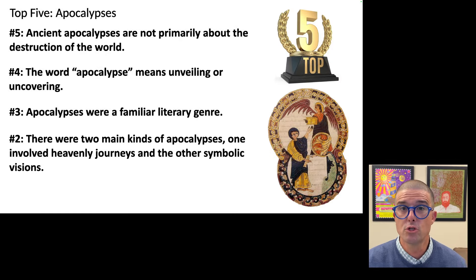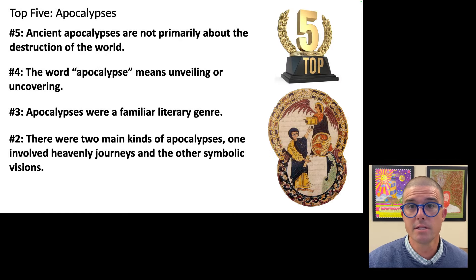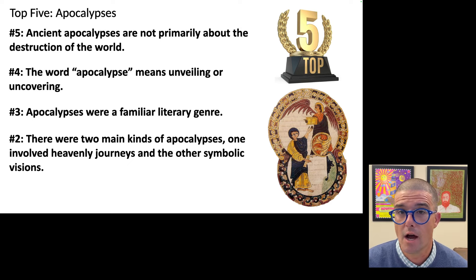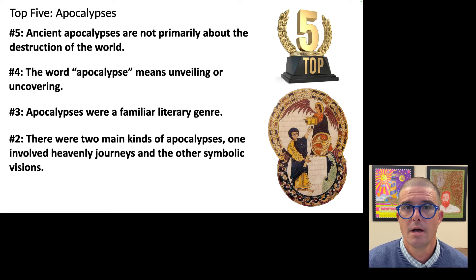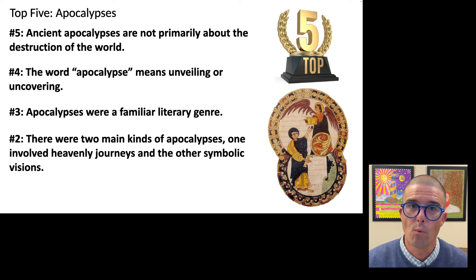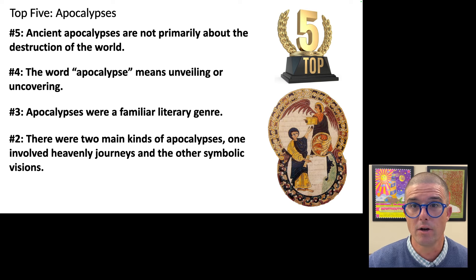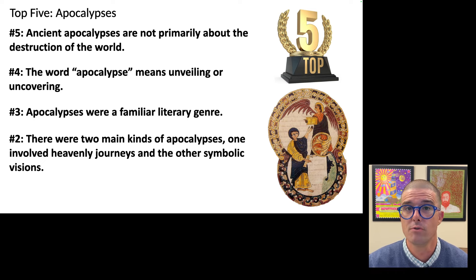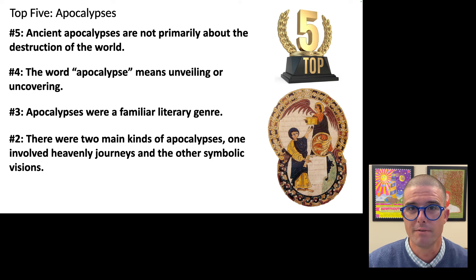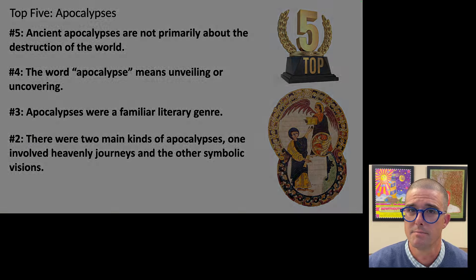Number two: there are two main kinds of apocalypses — one involves heavenly journeys and the other symbolic visions. Either the human being, the seer, is taken into heaven and allowed to see what's happening there, or they're given a vision that reviews historical events through symbols. Let me show you an example of each of these while also pointing out some of the generic elements of apocalypses.